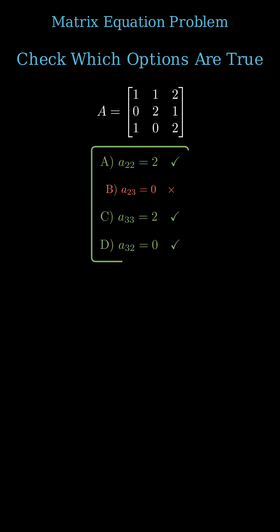Let's check which of the given options are correct. Options A, C and D are correct. Option B is false. The correct answers are A, C and D.